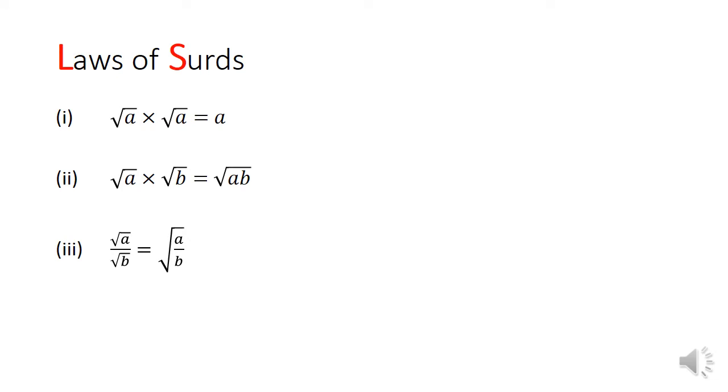Surds are irrational roots of integers. For the purpose of this video, we will focus only on square roots. There are three laws of surds. These rules are quite self-explanatory and are special cases derived from the laws of indices covered in the previous lecture.